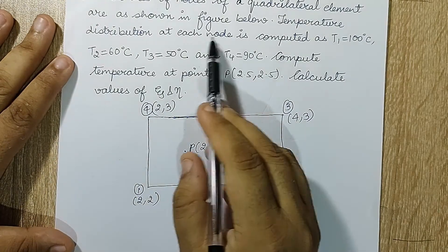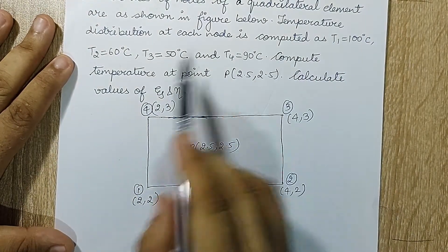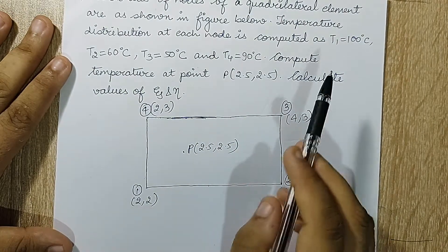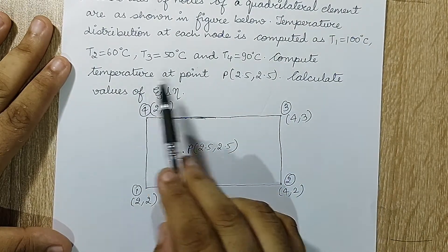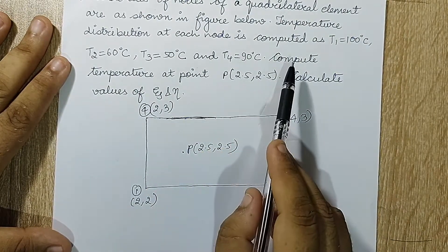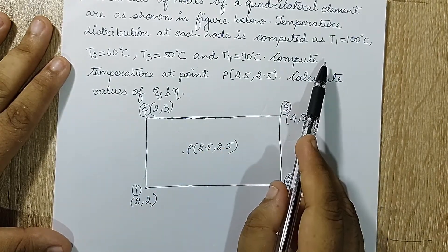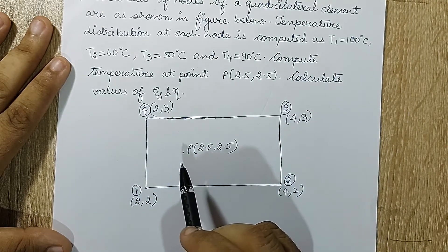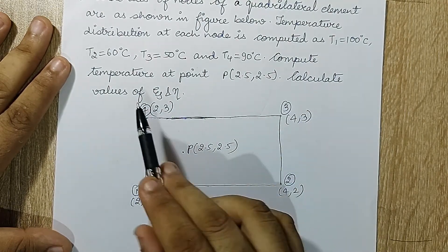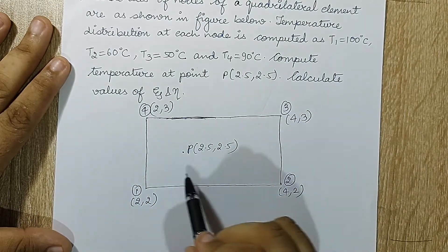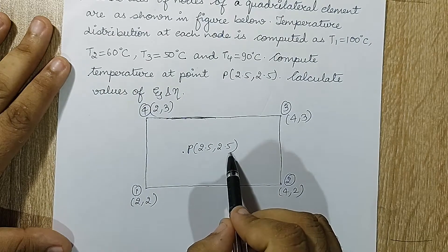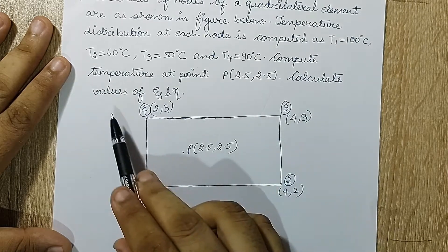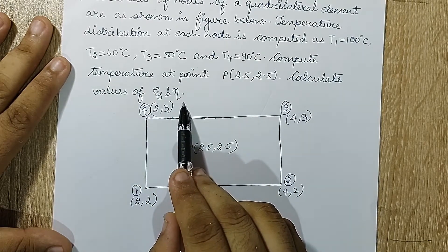Coordinates of nodes of a quadrilateral element are as shown in the figure below. Temperature distribution at each node is computed as T1, T2, T3, T4. These values are given to me. Compute temperature at the point P(2.5, 2.5). Calculate the values of zeta and eta.